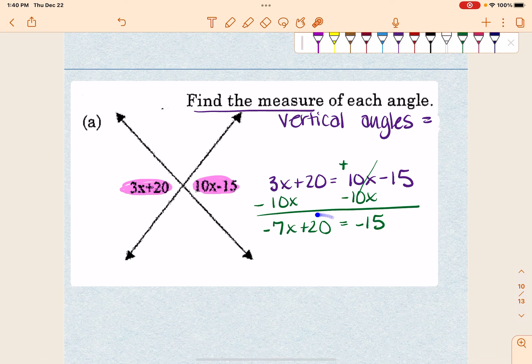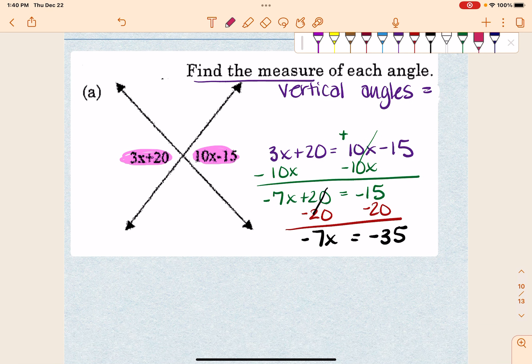Then I want to move this over here. So if it's positive 20, I'm going to subtract 20 from both sides. So that cancels. I'm left with negative 7x and negative 35. So the last thing I would have to do to get x alone is divide by negative 7. So x is equal to 5.